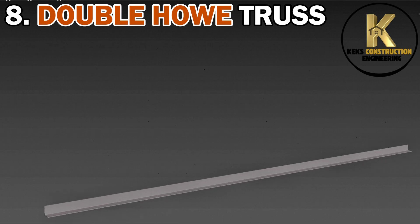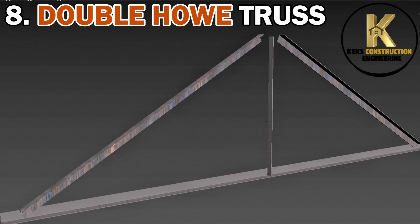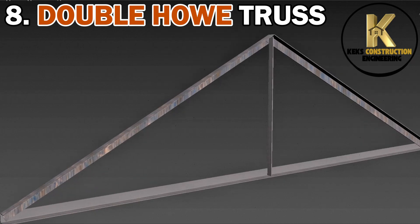8. Double Howe Truss. This is a repeated Howe design for very long spans, typically used in factories and wide-span halls.